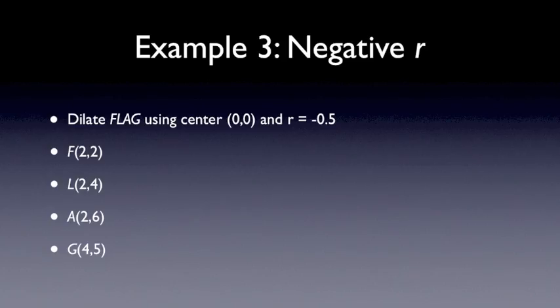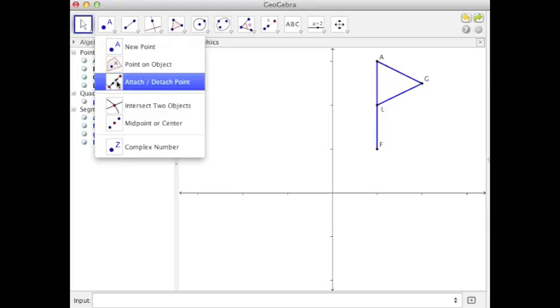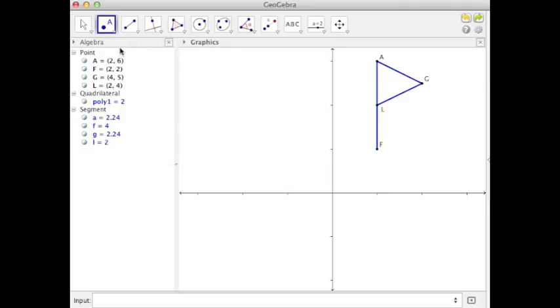For the next example, let's try using GeoGebra to show a negative scale factor. So we have FLAG using the center point 0, 0, and a scale factor R equals negative 0.5. Here we are going to dilate this image, FLAG, dilated in the origin with a scale factor of negative 1 half. So first I'll plot a point at the origin,